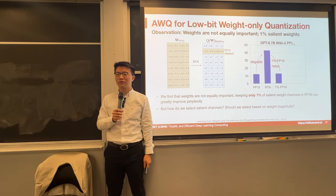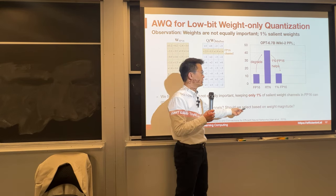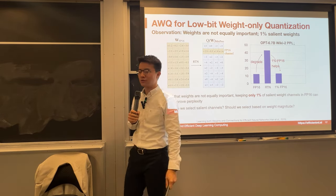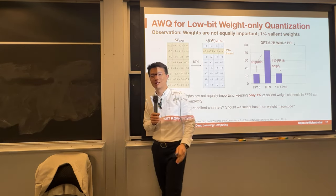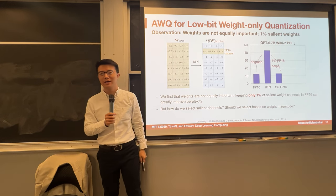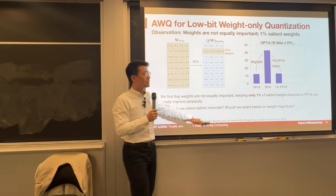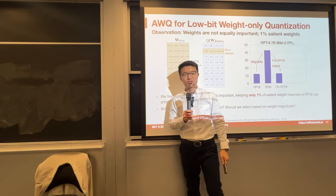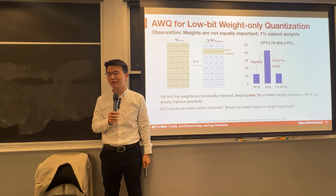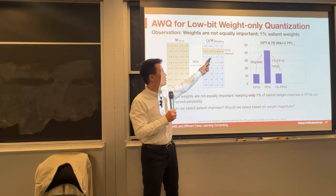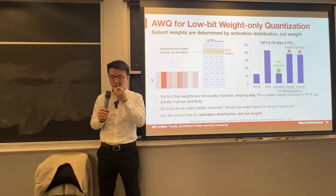Therefore, we have two natural to-dos. The first is: how do we choose those salient channels — which channel is important, and how do we systematically select that 1%? The second to-do is: keeping FP16 makes the inference kernel difficult. How do we get rid of this mixed precision and still use full quantization, so everything is in int rather than having 1% in FP16?